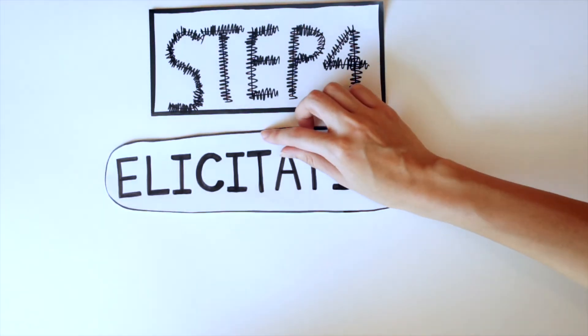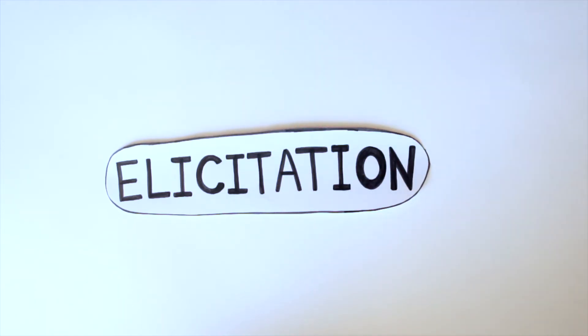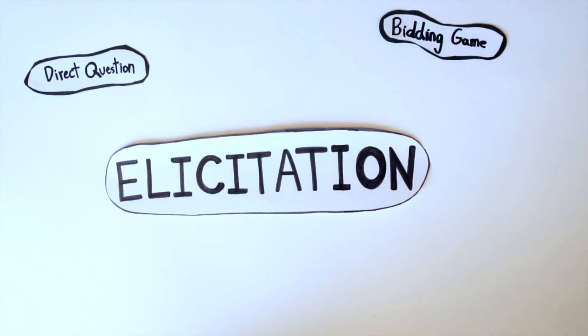Step four, elicitation. There are four methods to collect the survey. First, bidding game. For example, ask them for 15 baht and if they say yes, ask them for more, such as 20 baht. And if they say no, ask them for less, such as 10 baht. Second, direct question. Ask them how much are they willing to pay. Third, payment card. Make a list of numbers for them to choose.